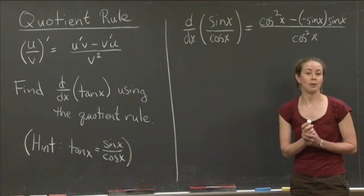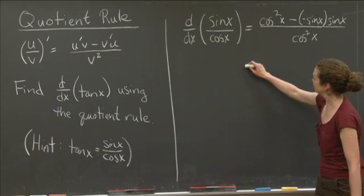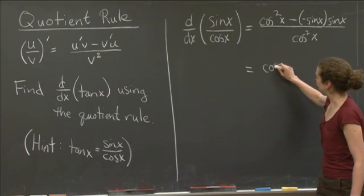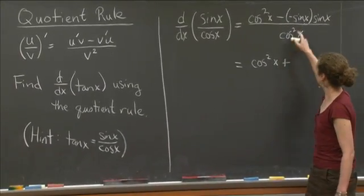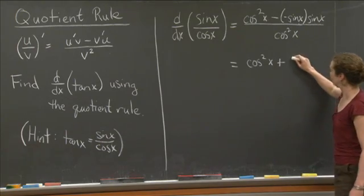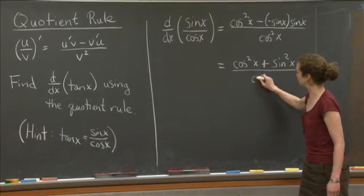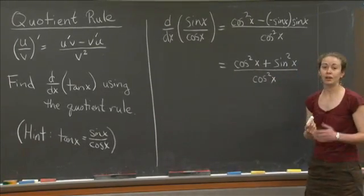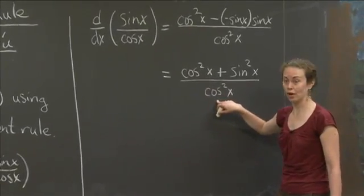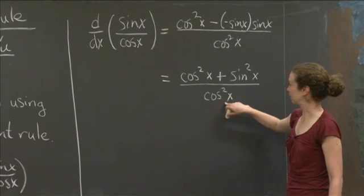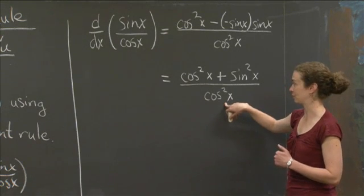At this point, this is a little bit messy, but the nice thing is that we can use some trigonometric identities to simplify this. Let me first write out what it is more clearly. Minus a negative gives you a positive. Here I get sine x times sine x, so I get sine squared x, divided by cosine squared x. Now at this point, some of you might have divided by cosine squared x here and gotten 1, and divided by cosine squared x here and gotten tangent squared x. Then from there, you could simplify to another trigonometric function.